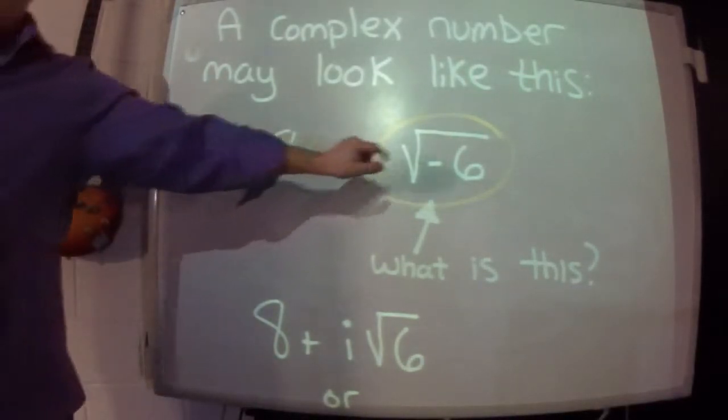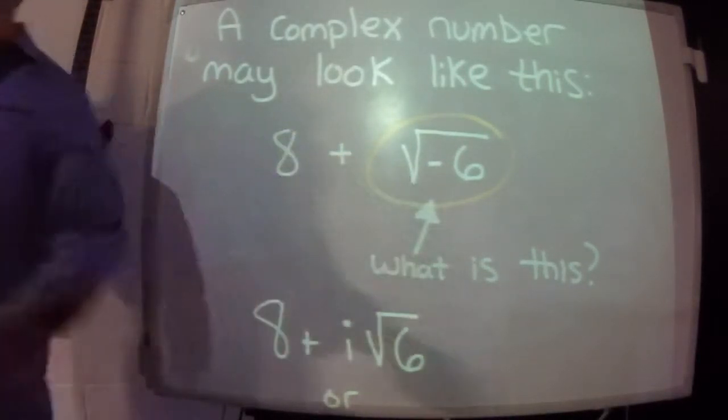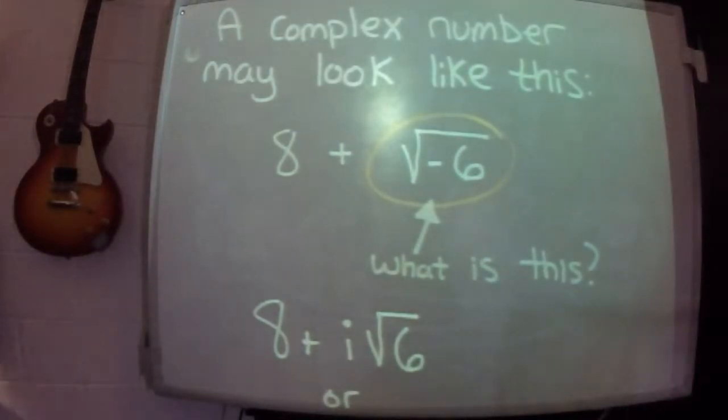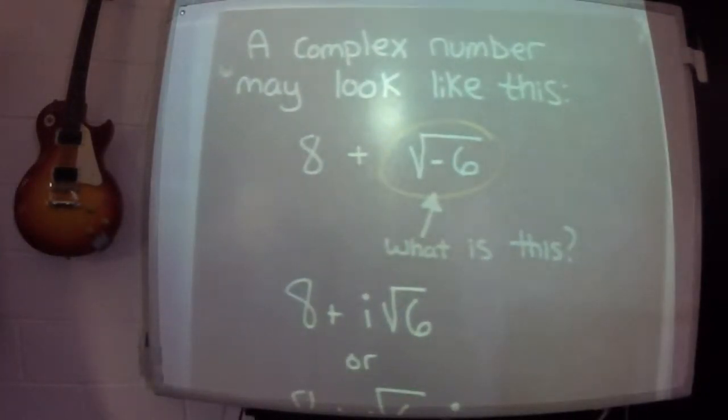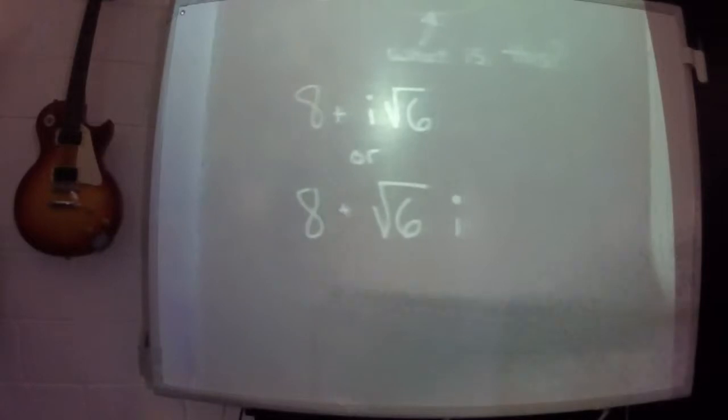It's not possible. So what do you do with that not possible negative six? I put an i and then I remove the negative. So square root of negative six is actually i square root of positive six.